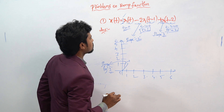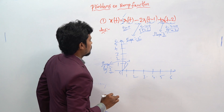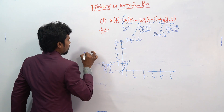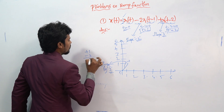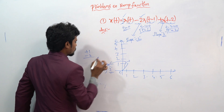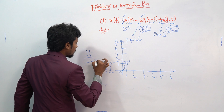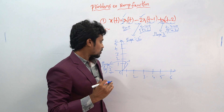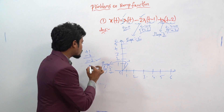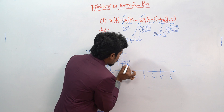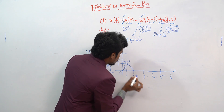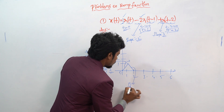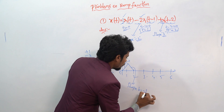When we reach t equal to 1, observe plus 1 minus 2 equals minus 1. That means we have to decrease the slope by minus 1 unit from t equals 1 onwards.